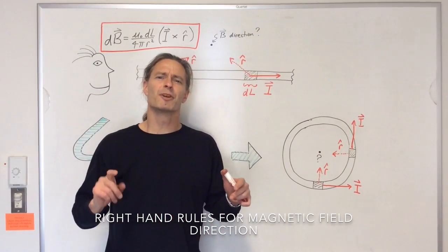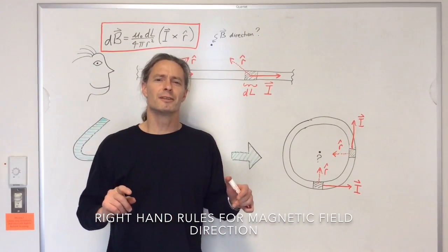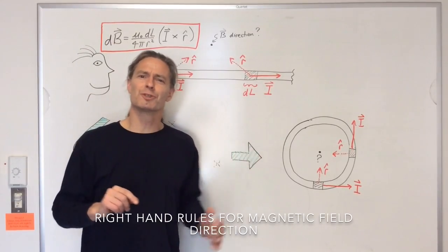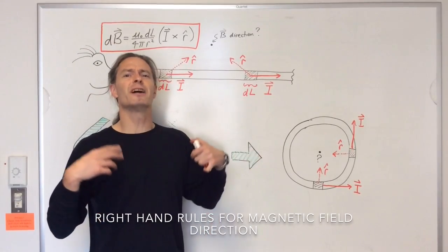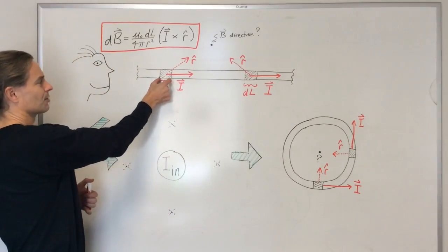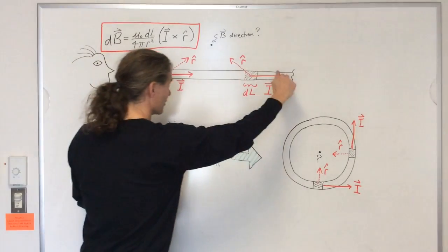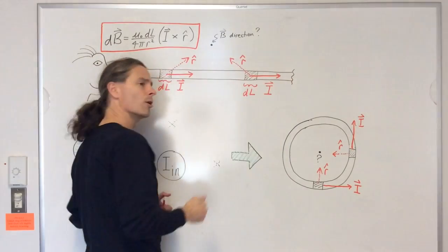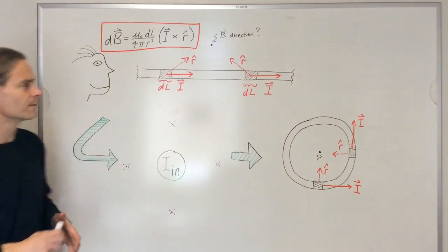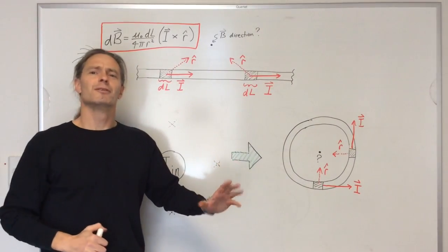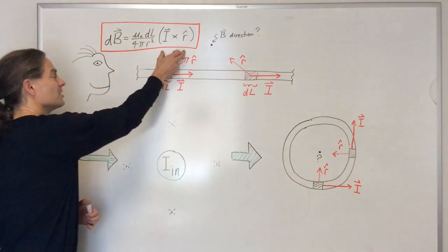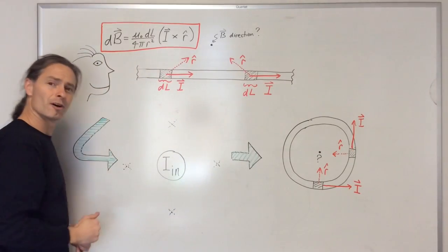In this video, I want to bring some unity, and hopefully some clarity, to the various right-hand rules associated with finding the direction of the magnetic field produced by a little current element, a full current segment, or even a loop of current. The origin of all these right-hand rules is in the cross product of the Biot-Savart law.